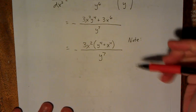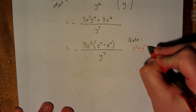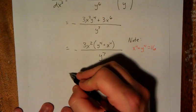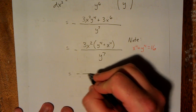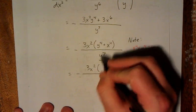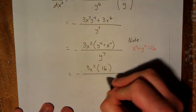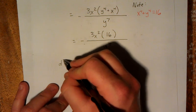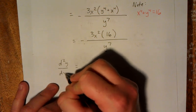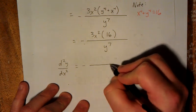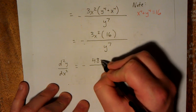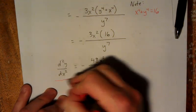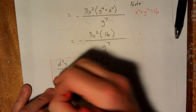So we'll make a quick note here, that x to the fourth plus y to the fourth is actually equal to 16. As a matter of fact, I'm going to make that substitution. So instead of y to the fourth plus x to the fourth, this is now equal to 16. The denominator is still y to the seventh. Last step for simplification. This is the second derivative, and this is negative 48x squared over y to the seventh. That is my final answer.